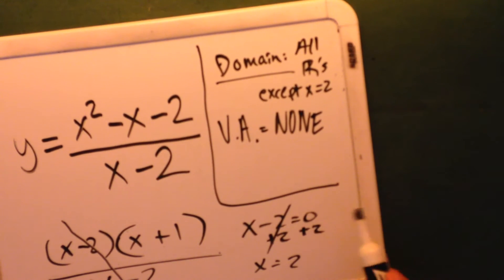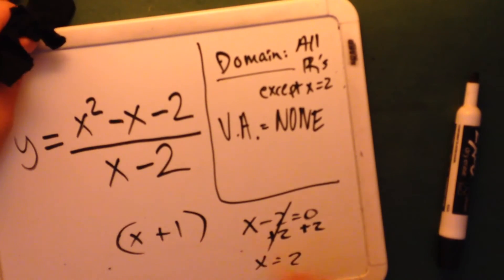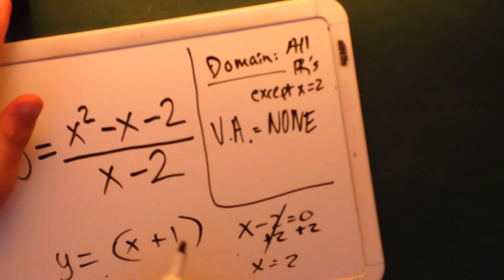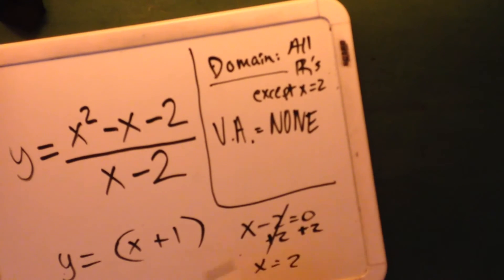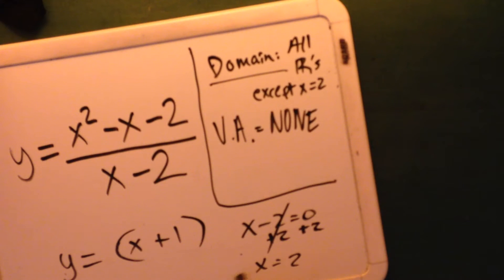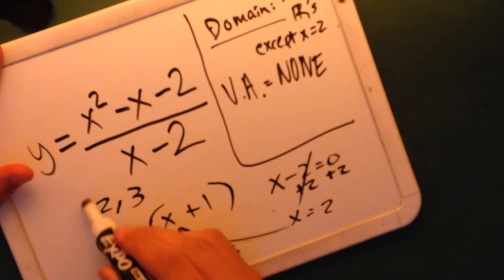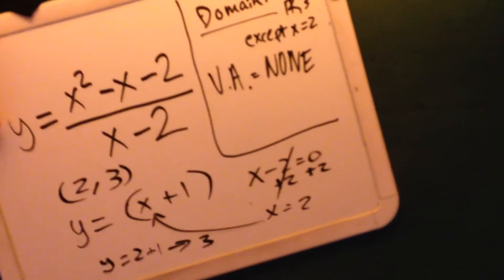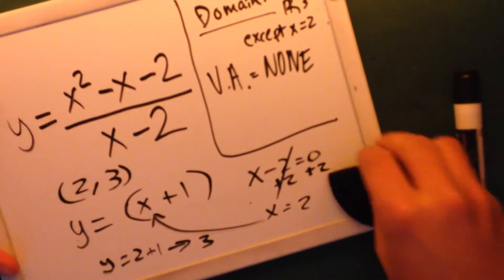If you want to find exactly where that point is, now that we've crossed (x minus 2) out, we go to our simplified version: y equals x plus 1. We plug in x equals 2, our point of discontinuity, into the simplified version x plus 1. So y equals 2 plus 1, which means y equals 3. That means if you graph it, the open circle is going to be at the point (2, 3).